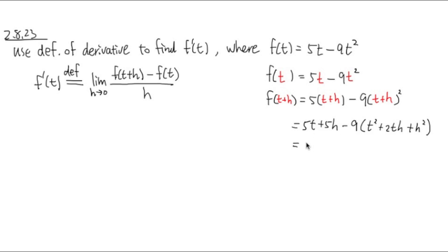And then, well, the first part is the same. 5t plus 5h. But I will distribute the negative 9 into the parentheses here. I will have negative 9t squared. Negative 9 times that is minus 18th. And negative 9 times h squared is negative 9h squared.